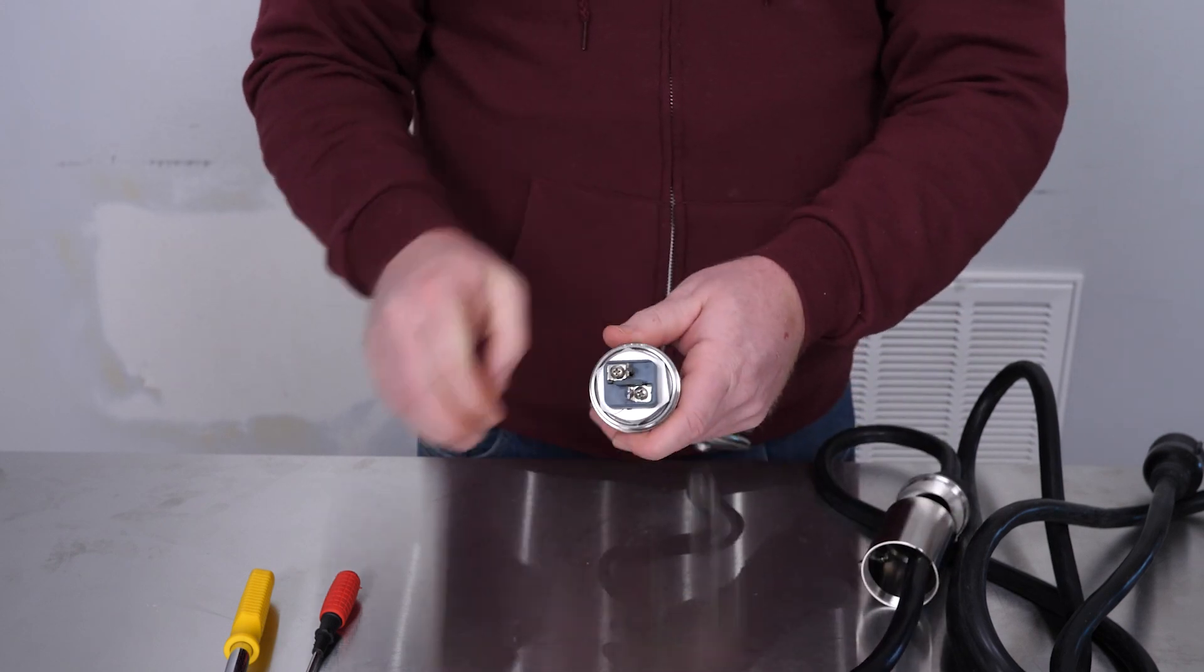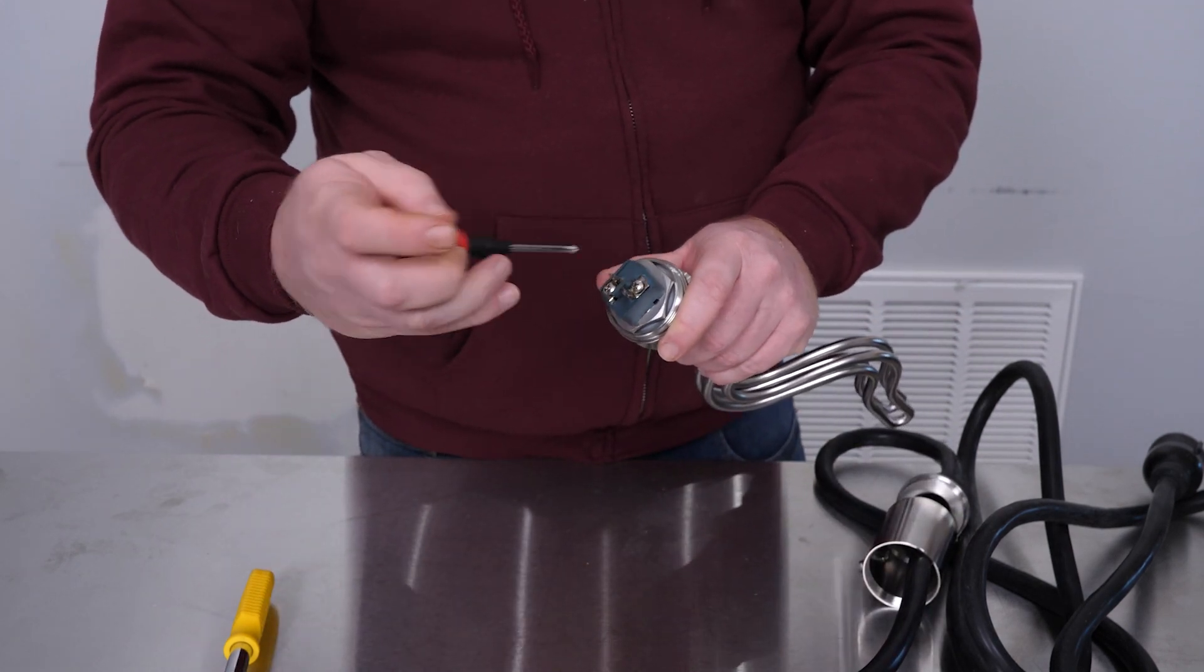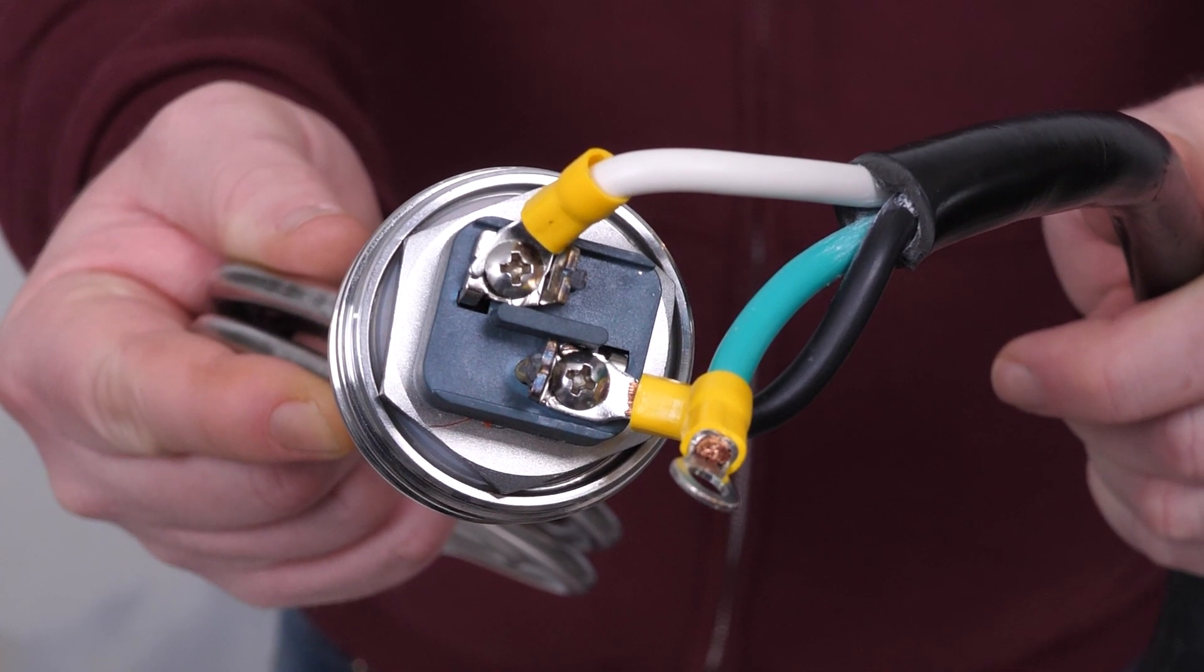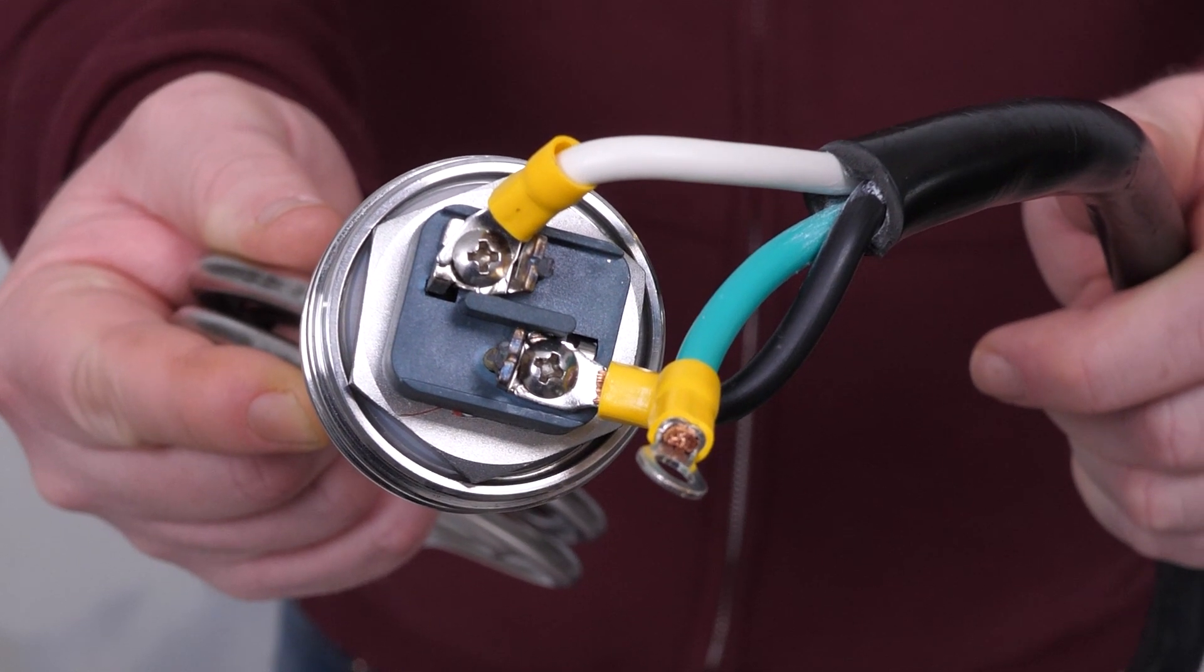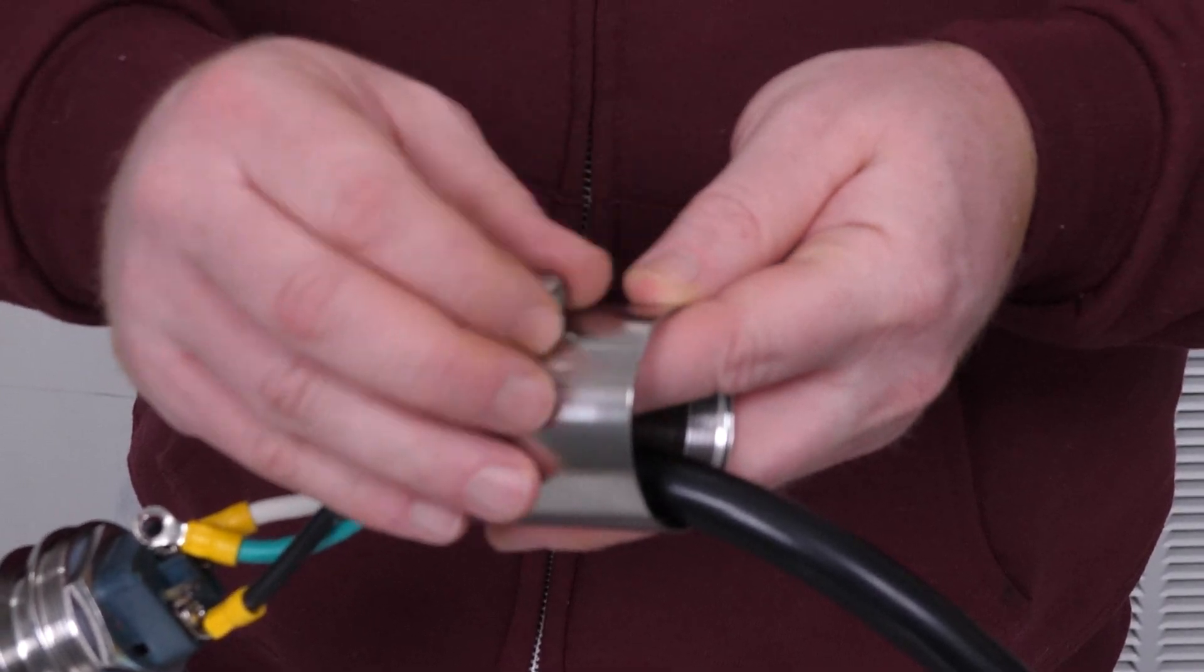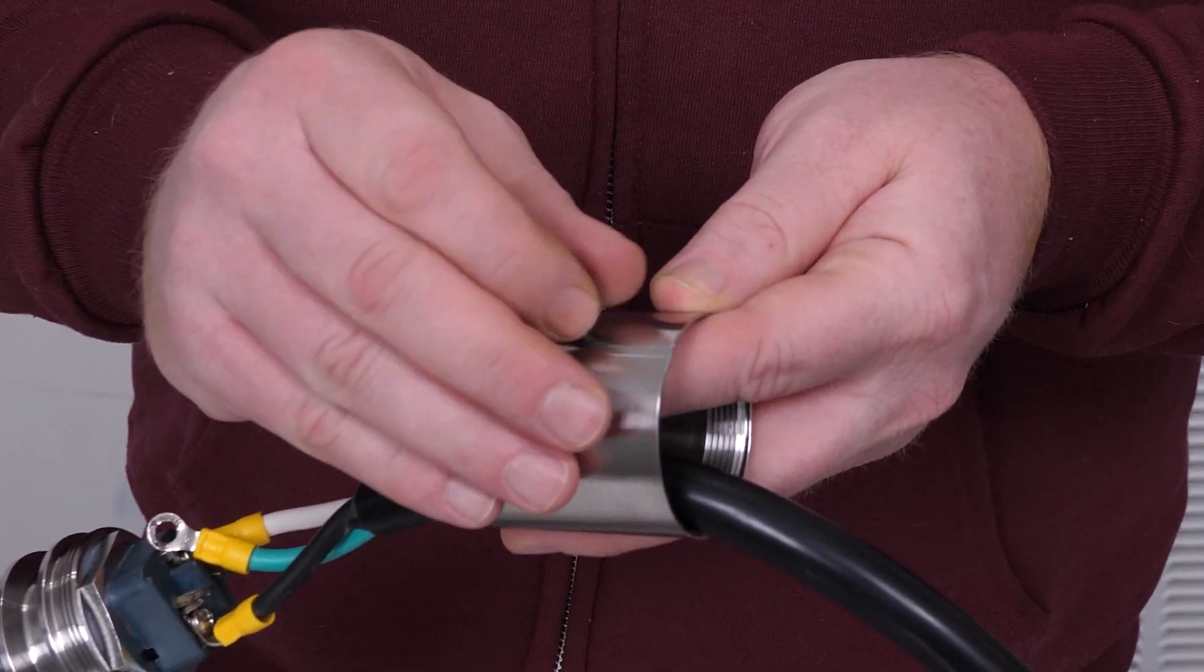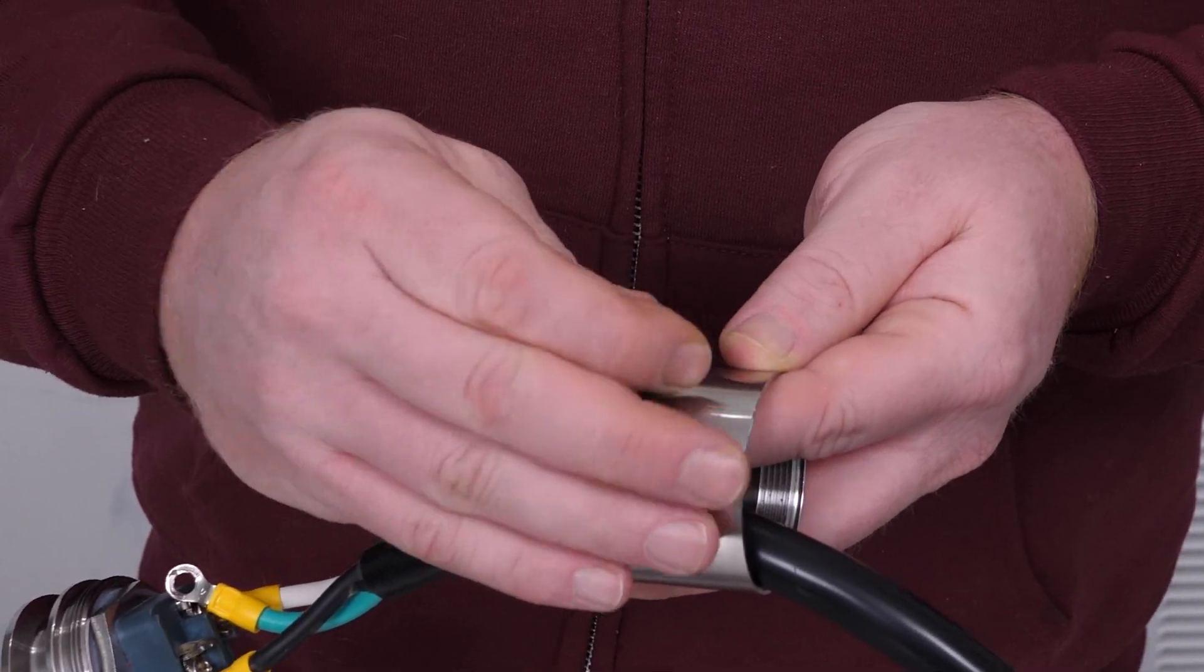Loosen your Phillips screws and attach the black and white wires. It doesn't matter which goes where. At this point, you have your black and white wires connected. Now take out the ground screw. There's a lock washer and a nut below.